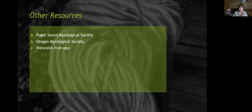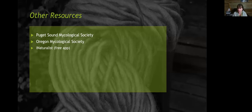iNaturalist is great to have in the woods — you can access the app from wherever you are and it'll show you photos of what people have photographed and identified nearby. I wouldn't use it to figure out if I'm going to eat a mushroom, but it's good for identification.